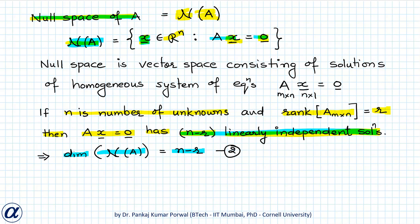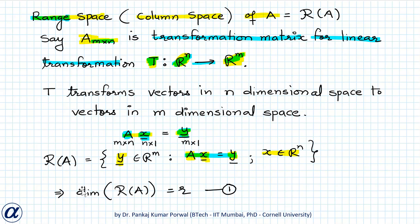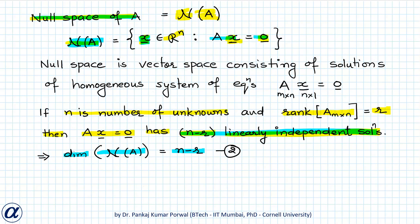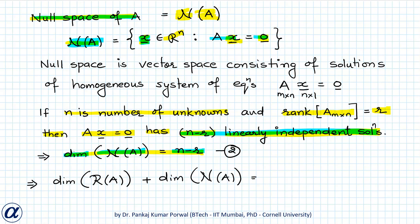So we know that the dimension of the range space is R and the dimension of the null space is n minus R. From these two results we can conclude that the dimension of the range space of A plus the dimension of the null space of A equals R plus (n minus R), which equals n. This is our rank-nullity theorem.